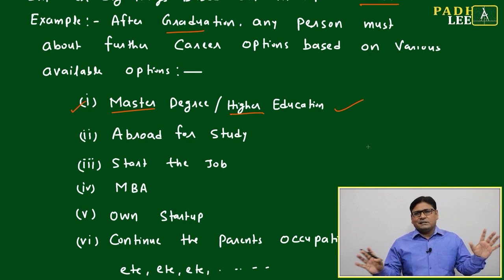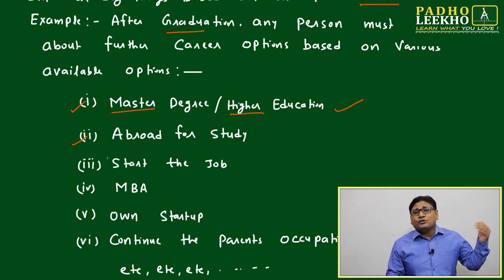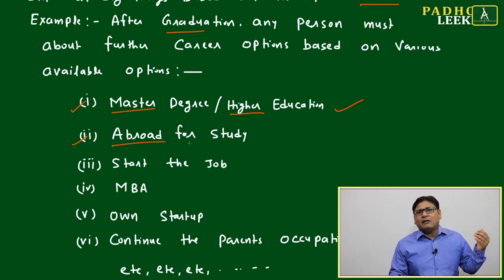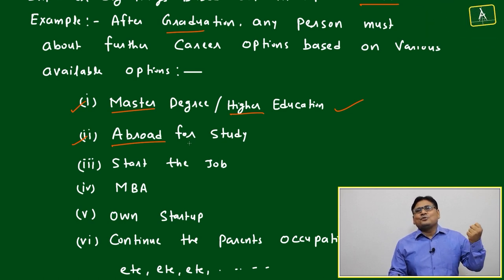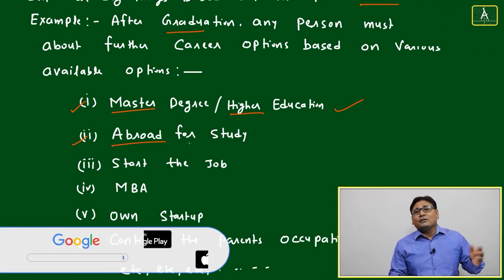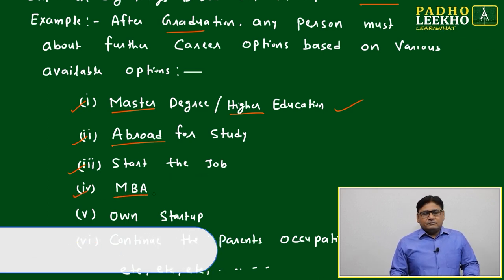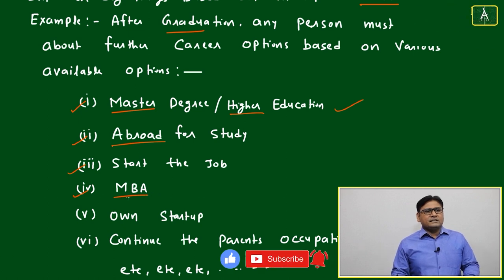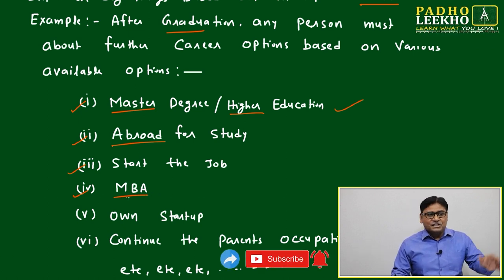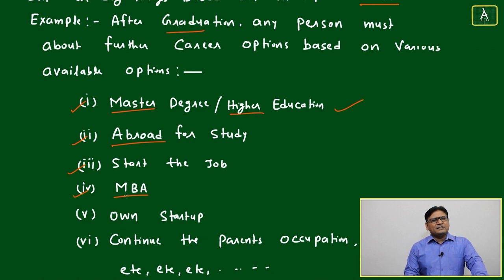Another category of people - they start the job. Another category, like you, are preparing for MBA entrance test and want to take admission in one of the top universities or colleges or institutions in India which will give you good thrust for your personal career, or maybe everything. If you're wishing to get good prestige in your society, everything can be gained from MBA. Startup - few people will be there. Sometimes we say it's crazy, but these crazy people may make change. Not all, but a few continue the parents' occupation. This is also one option, etc., etc. Multiple options. We are deciding based on multiple factors.